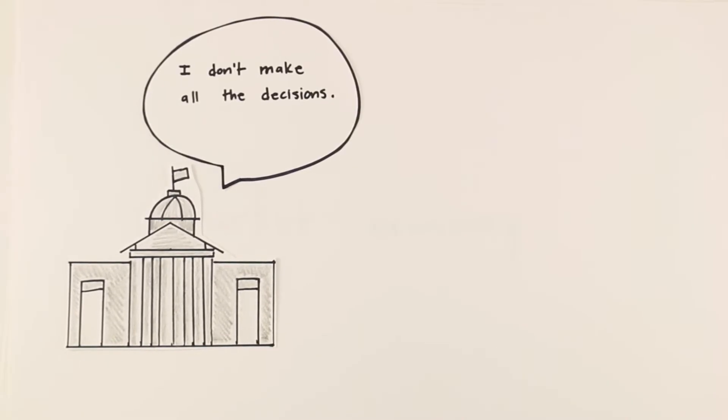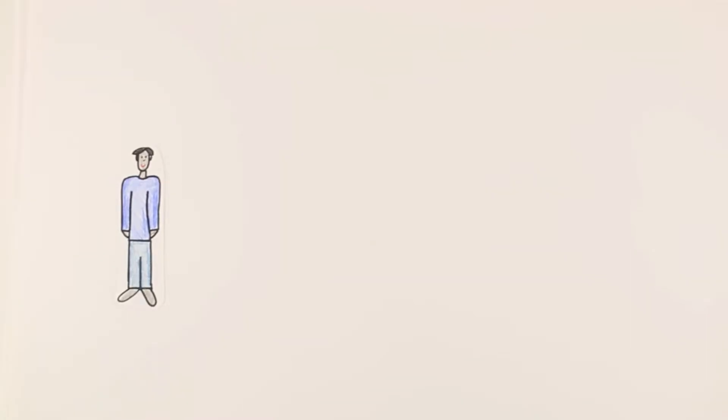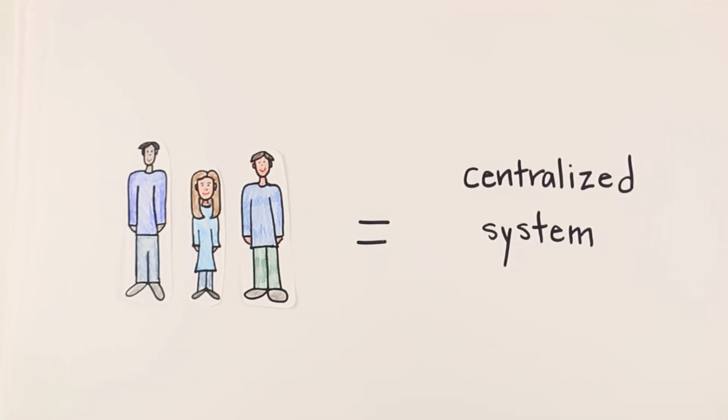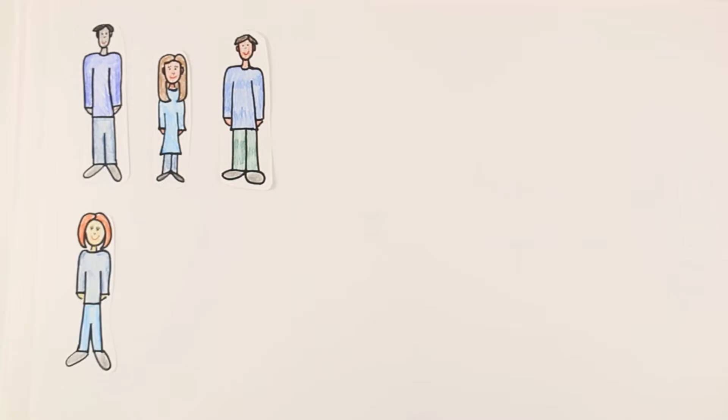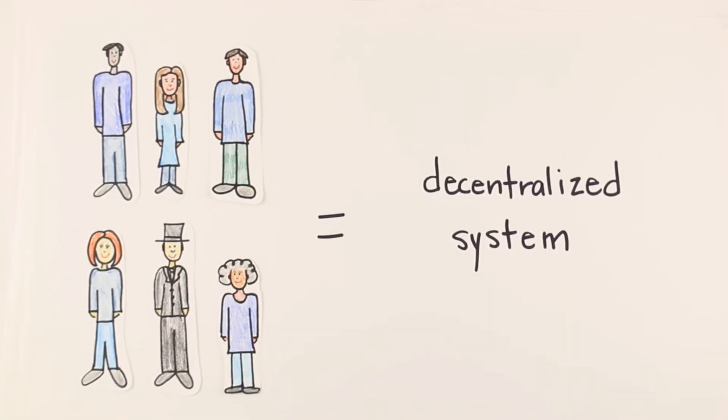In this system, the majority of economic decisions are not made by the government. They are made by the people. If the decisions were made by one person or a small group of people, we would call this a centralized system. But because the economic decisions are made by many individual people, we call it a decentralized system.